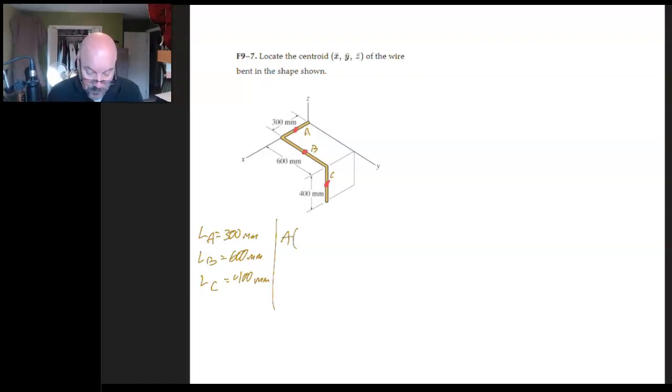So I'm going to do it like this. I'm going to say A. A is straight on the x-axis. It's a length of 300. It's halfway down. So what I'm going to do is I'm going to say 300 over 2, 0, 0. Just like that. Then that I'm going to turn into this, 150, 0, 0.